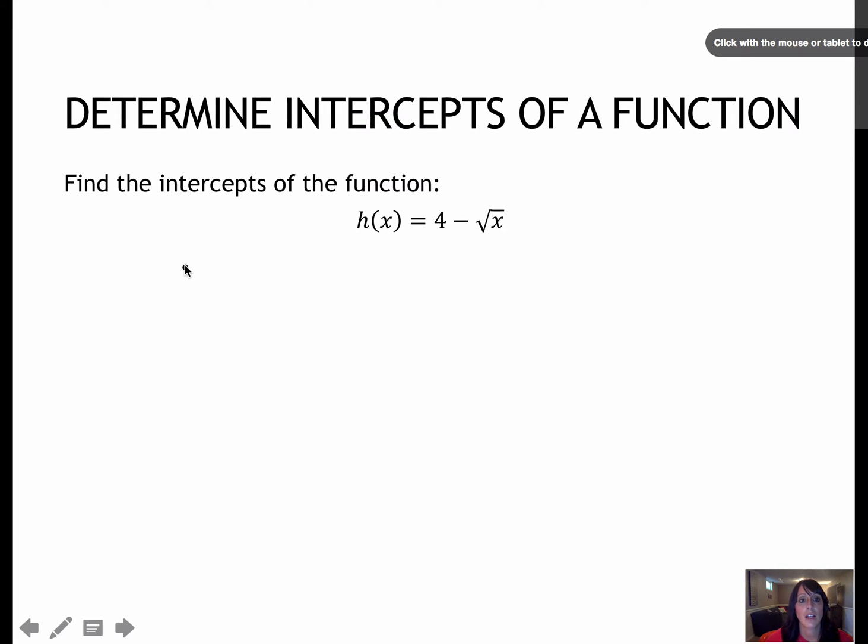Here's another one to try. If I'm trying to find the x-intercept, I make y equals 0, which means h of x is equal to 0. And if I'm trying to find the y-intercept, then I make x equals 0, so h of 0 equals 4 minus radical 0. For this one, I would add that radical x so that it's positive. So I have radical x equals 4. To find the solution, I would square to get x equals 16, which means 16 comma 0.